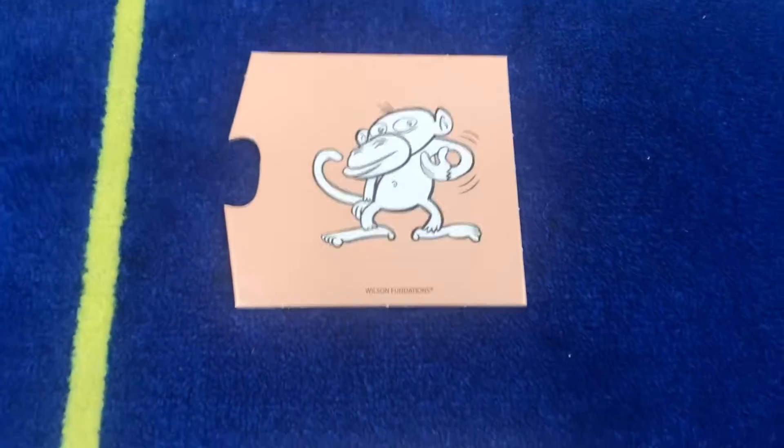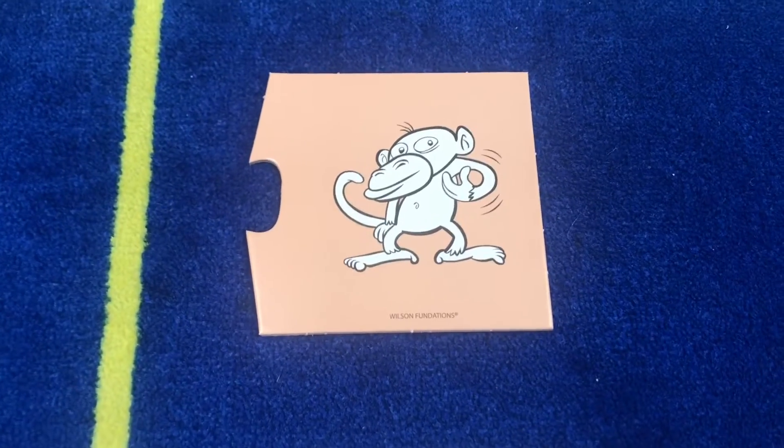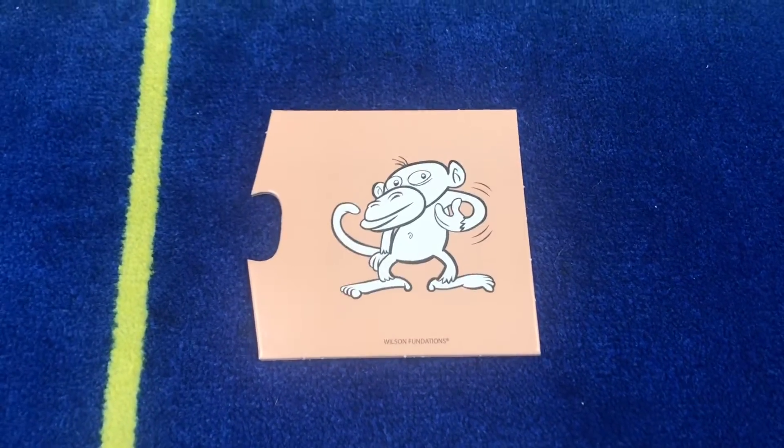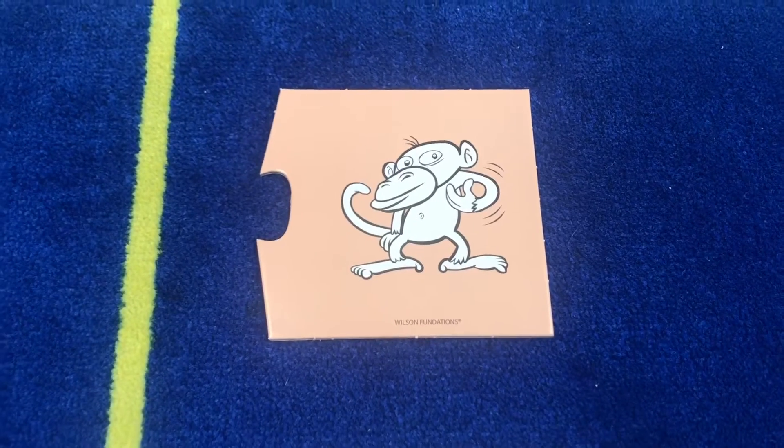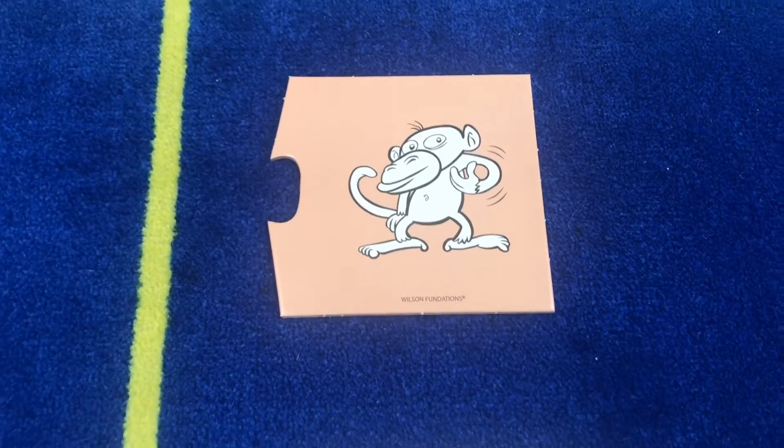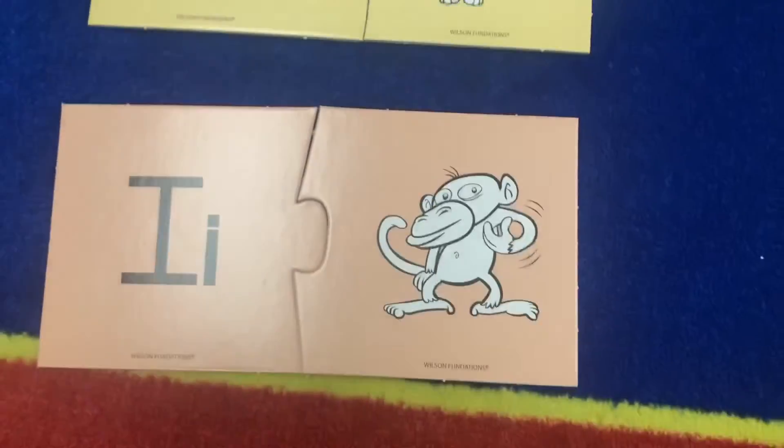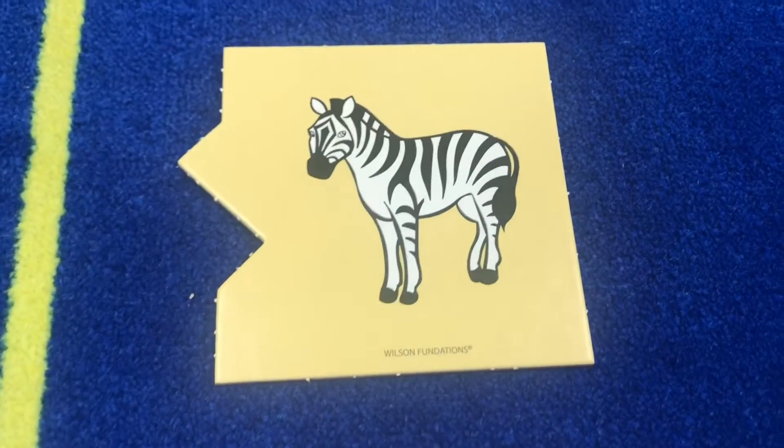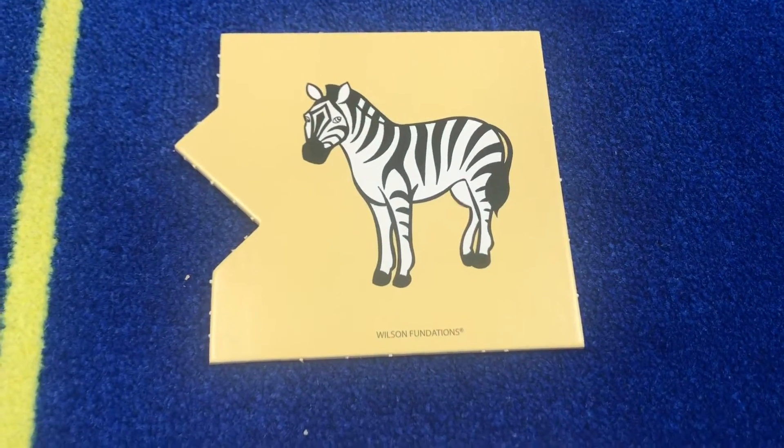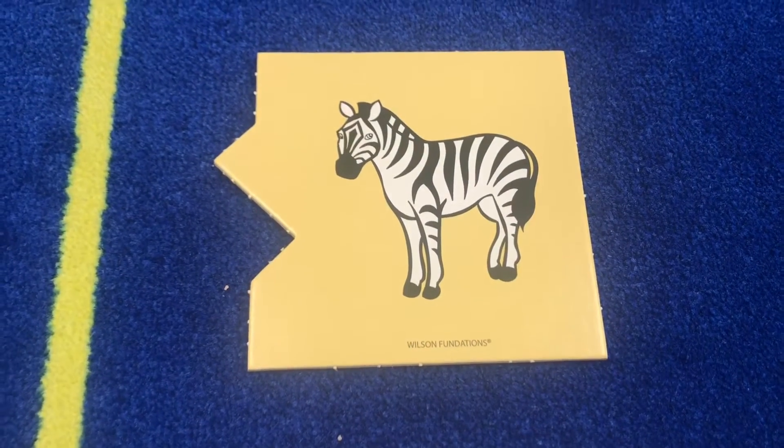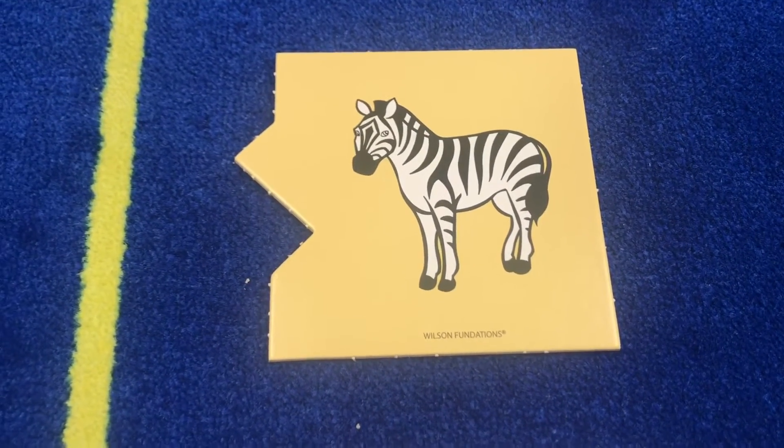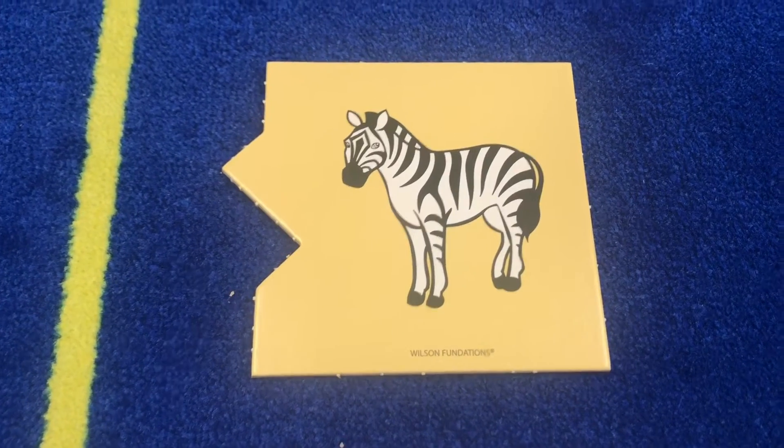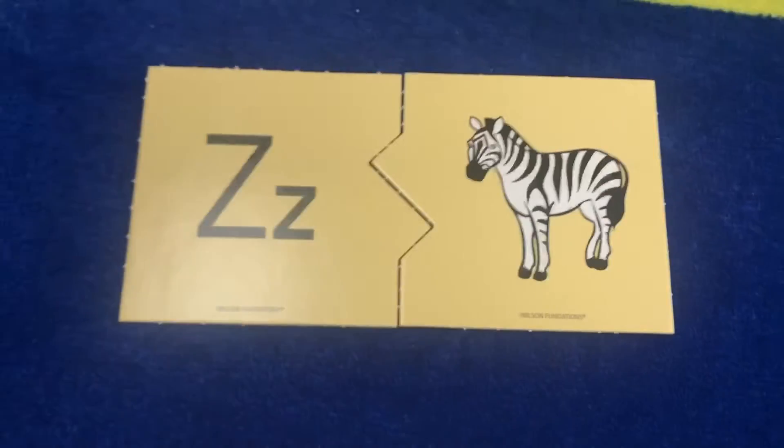This is a monkey and what is he doing? He is itching. So he is actually going to start with the I. I, itch. What's this? This is a zebra. What does zebra start with? Z is correct. Z, zebra.